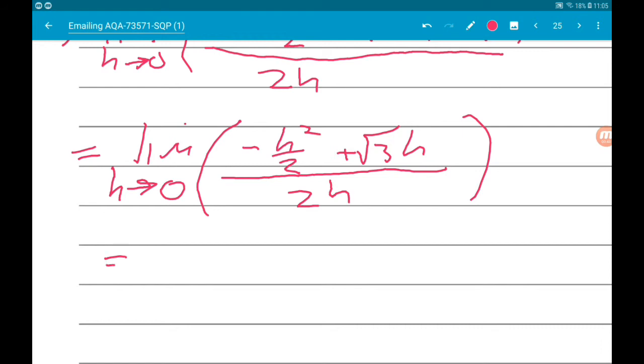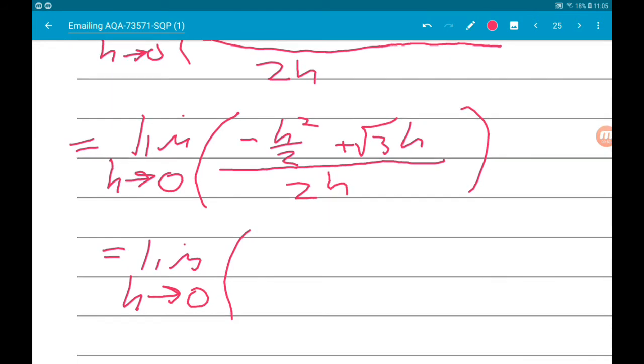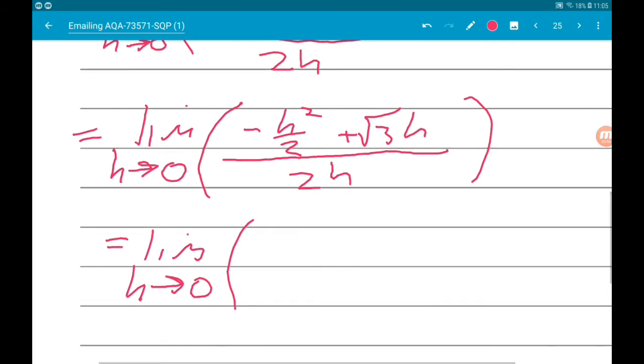Now the factor of h disappears. So minus h squared over two divided by two h is going to leave us with minus h over two, and then root three h divided by h is going to leave us with root three. So now all we're left with is a two on the bottom.